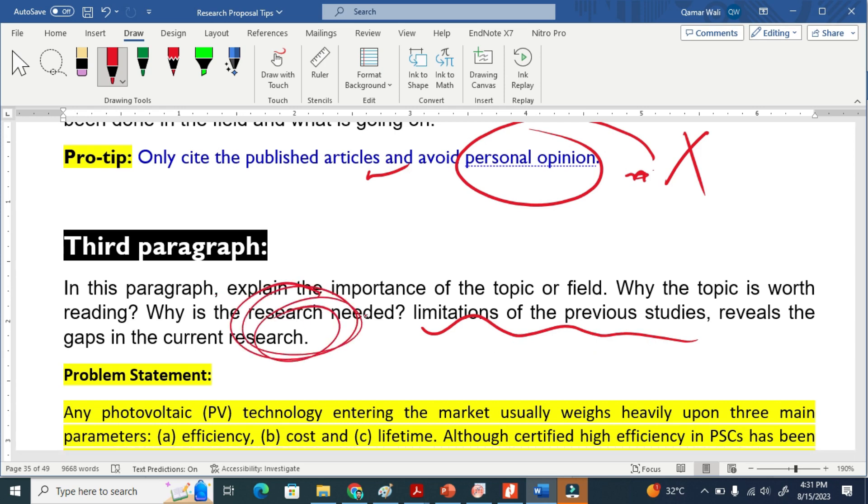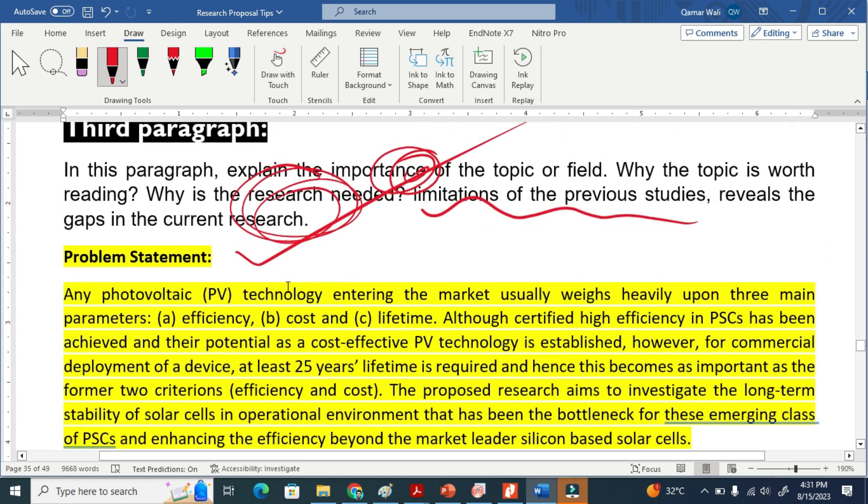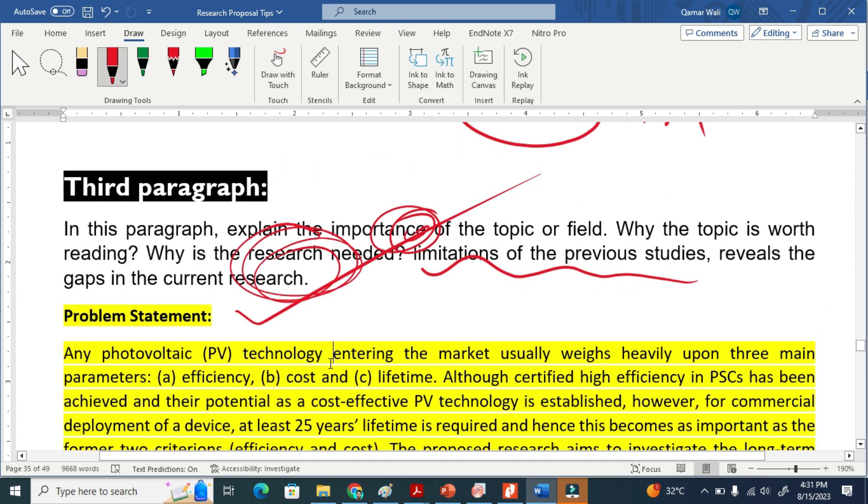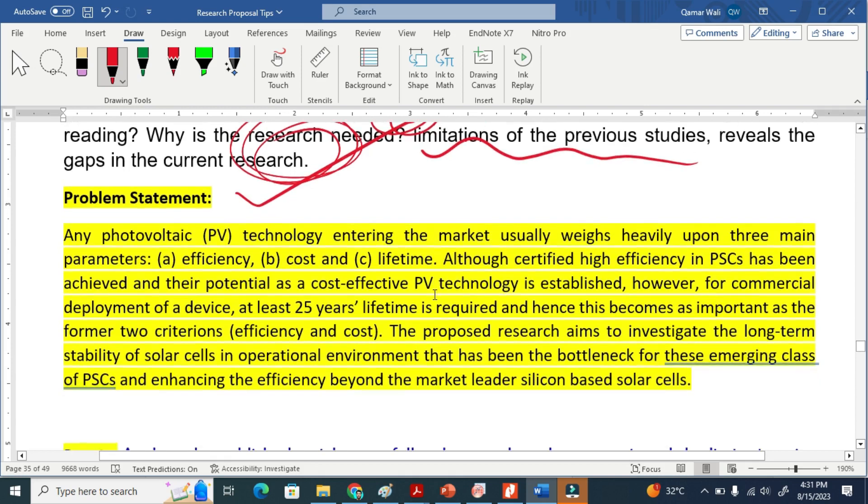What are the importance of that research. Sometimes you have to keep this problem statement separate. The third paragraph is basically the problem statement. But in the research proposal you have to make this separate. But you have to explain the limitations in that previous study.